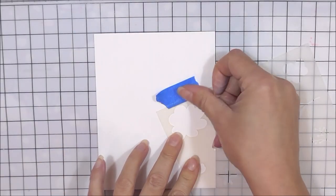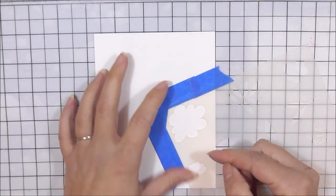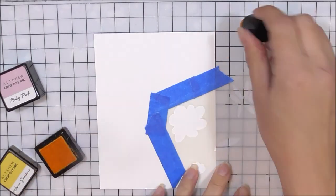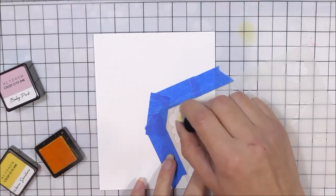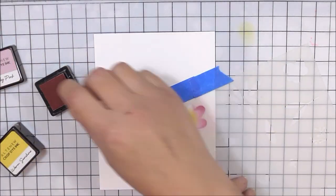First up I'm going to be using the stencil and I'm just going to pop the little image that I want, this large flower, into place and I'm just going to add some tape around it. I'm then going to go ahead and use my little finger daubers and mini inks to color the images.